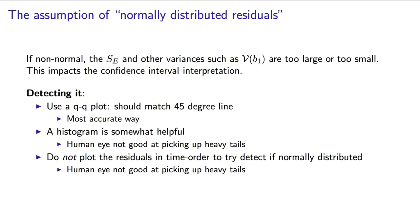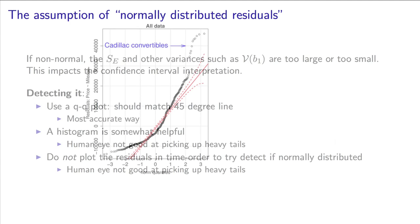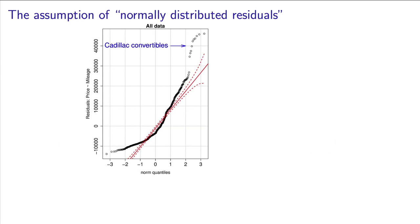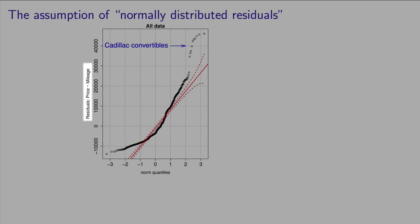If you detect non-normality in the residuals, we should try and correct it. Let's take a look at a few options now. Here is a regression model where we have tried to predict the price of a second-hand vehicle based on the number of kilometers, or mileage, driven.